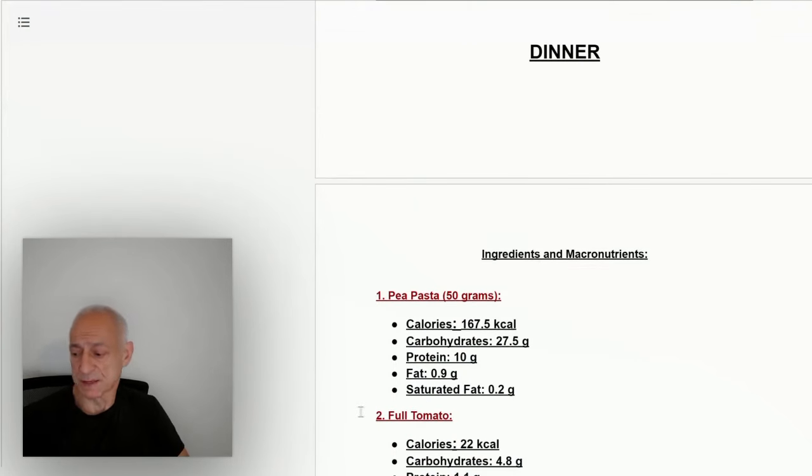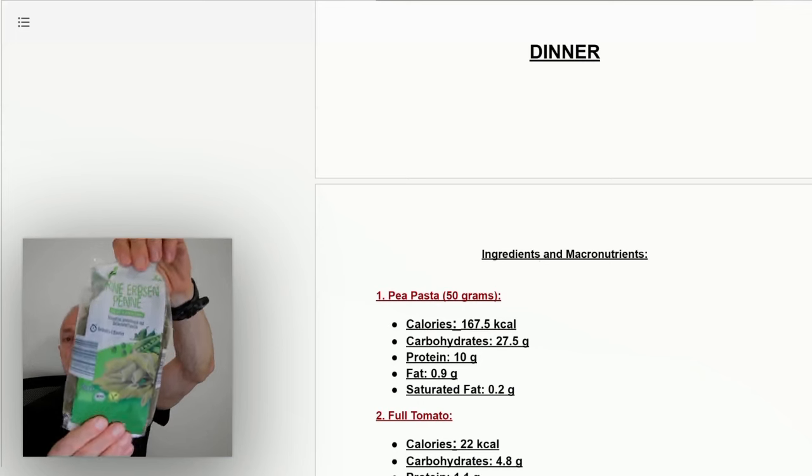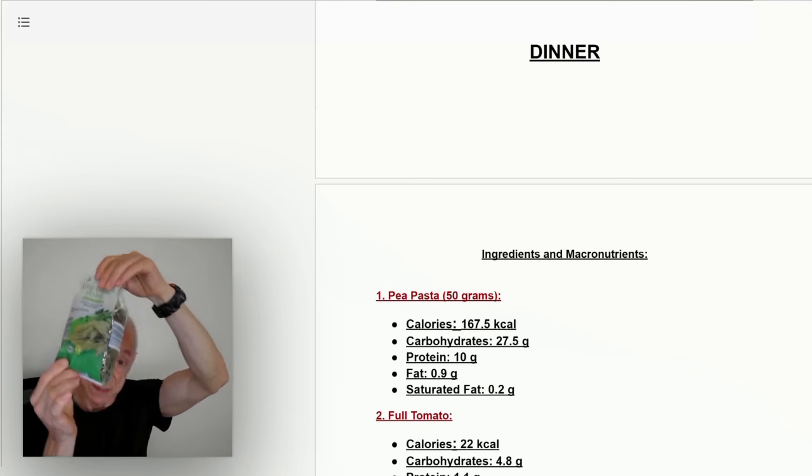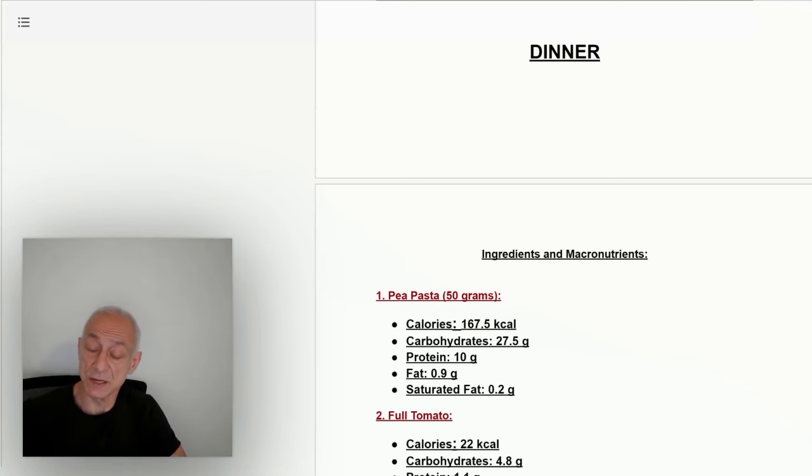Dinner: pea pasta, organic pea pasta. Same thing—high in protein and low glycemic. Takes longer to burn. This is the kind of carbohydrates I like. The pea pasta, 50 grams, 170 calories, 27 grams of carbs, 10 grams of protein. Fat is nonexistent, saturated fat is nonexistent.